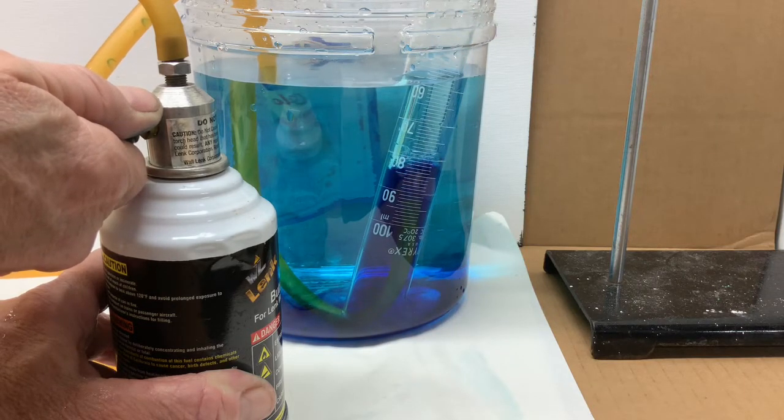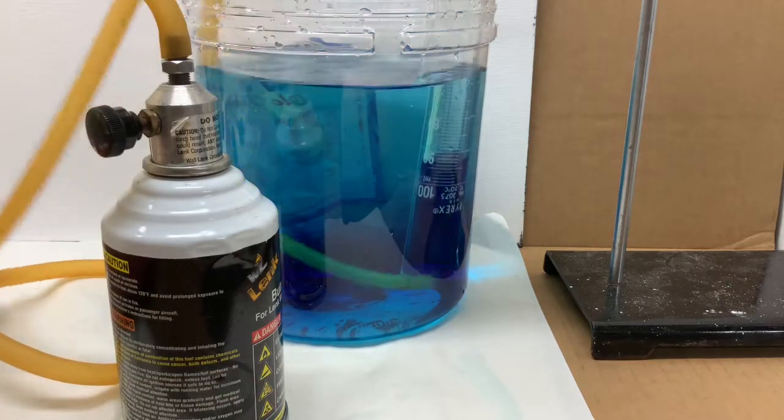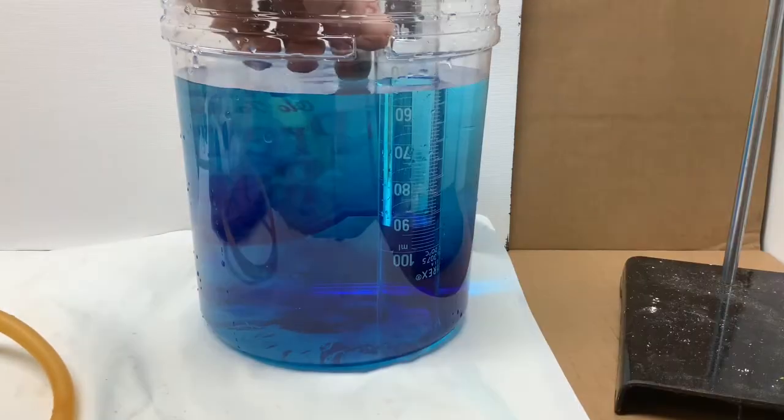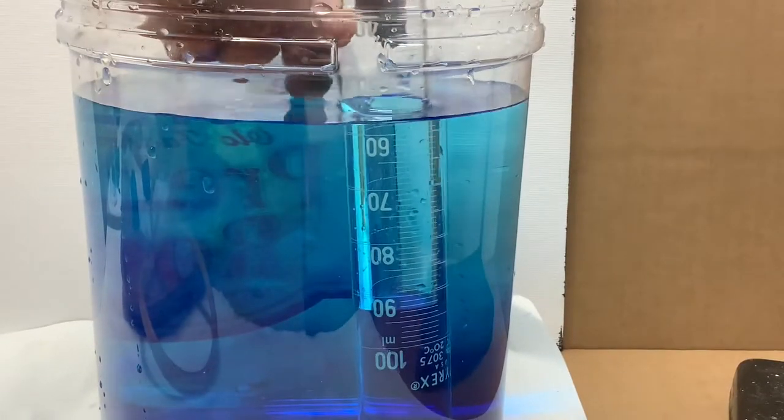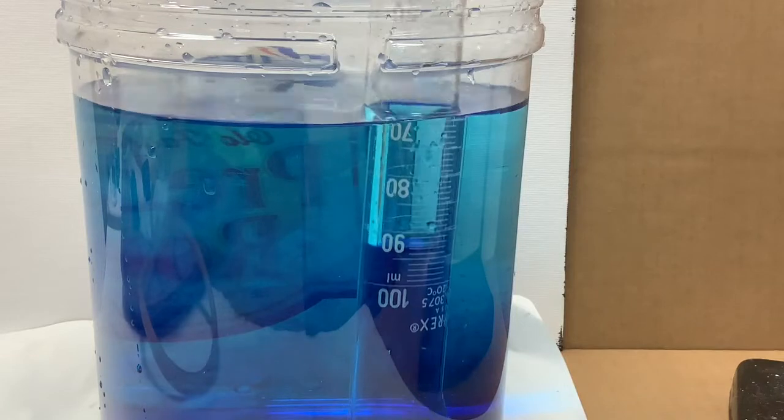Then I'll remove the hose. Don't want to go beyond that hundred mil mark. Remove the hose and bring the apparatus a little bit closer so you can make a measurement of the amount of water after we level the water inside and outside of the grad cylinder.